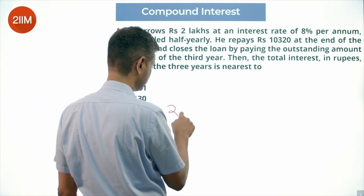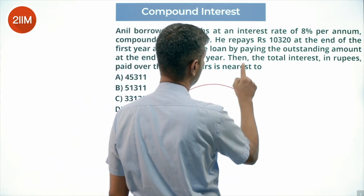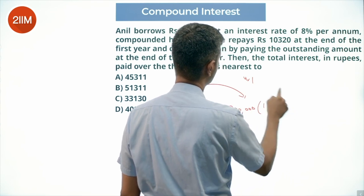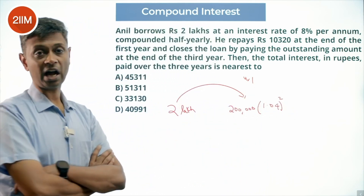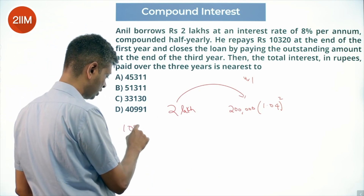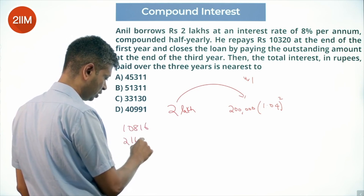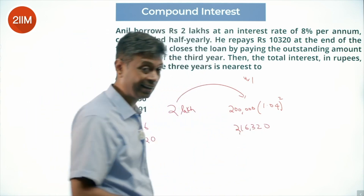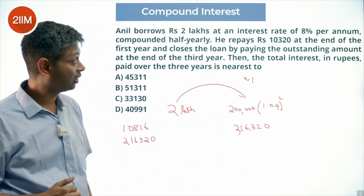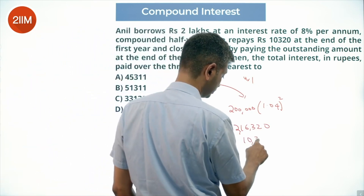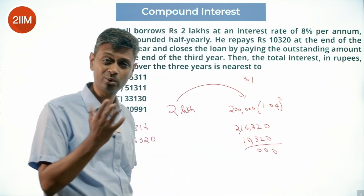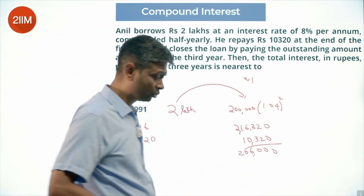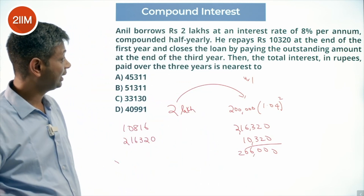It takes 2 lakhs. At the end of year 1, this will become 200,000 into 1.04 whole square — 8% per annum compounded half-yearly. 1.04 whole square is 1.0816, so this becomes 2,16,320. The amount outstanding is 2,16,320 — 2 lakhs 16,320. From here we subtract 10,320. I would have loved to subtract 16,320 — life becomes simple — but only 10,320. So 2,06,000 is the amount outstanding at the end of year 1.